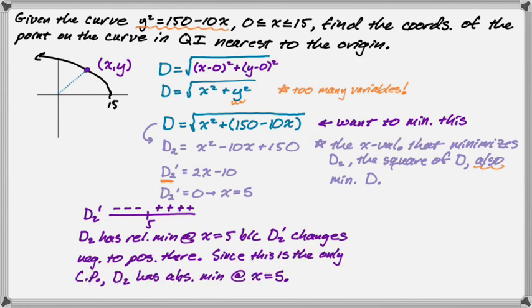So since this is the only critical point, D₂ has absolute minimum at x = 5. So you really want to work on your justifications, especially if you're in AP calculus. Free response questions, it's all about justifying things. So we have justified it. But we didn't actually answer the question, right? Because the question was to find... We know that D has a minimum when x is 5, but that wasn't the question. It was, what is the point on the curve that is nearest to the origin?